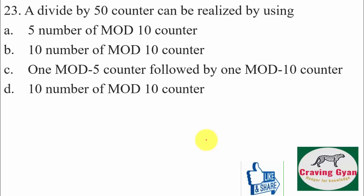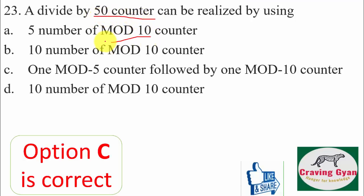Twenty-third question: a divide-by-50 counter can be realized using what? A divide-by-50 counter counts from 0 to 49. A mod-10 counter counts from 0 to 9.